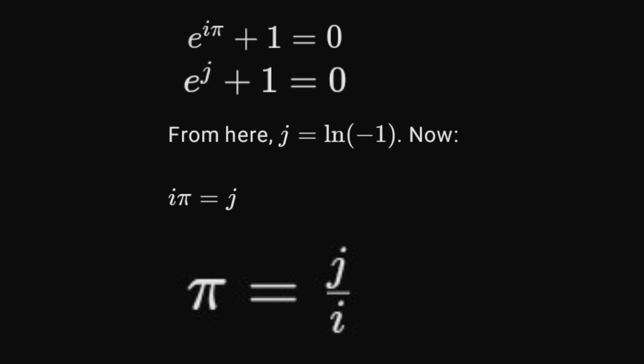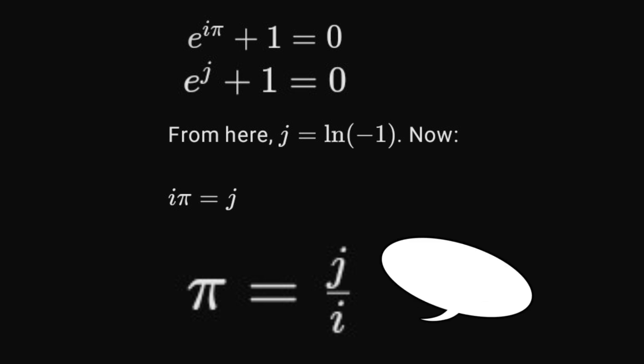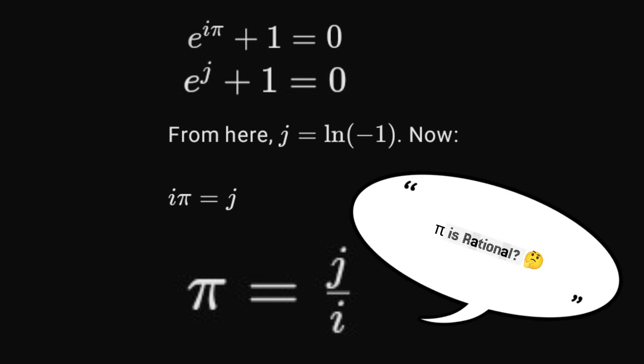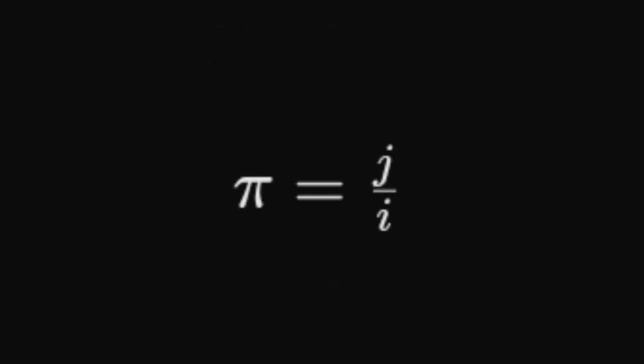Using the relationship between j and i, pi equals log negative 1 divided by i. This calculation shows how virtual numbers change the understanding of pi. By using the virtual number system, we can redefine pi and show new insights into this classic mathematical constant.